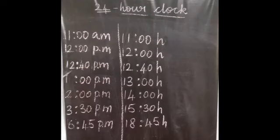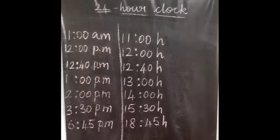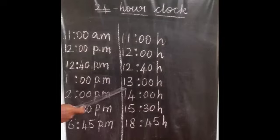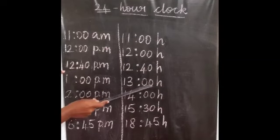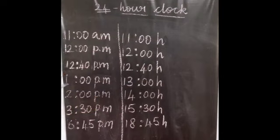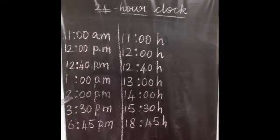Then 12:40 PM we will write as 12:40. Next, if the time is 1 PM, in 24 hour clock you should write it as 13:00 - so 12 after 1. You have to add 12 plus 1, which is 13. If the time is 2 PM, 12 plus 2 is 14, so 14:00.